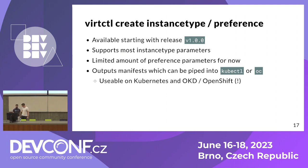As Felix said, we were working on adding virtctl create instance-type and preference commands. These commands help you to create the manifests — they will generate them for you. For virtctl create instance-type, we have support for most of the parameters that you can specify manually in the manifest YAML. For the preference command, we don't cover all options yet, but this command should serve more like a starting point so you avoid writing the whole YAML manifest from scratch. Basically you generate the YAML, save it to a file, and then modify it based on your needs. The outputs of these commands can be saved to file or piped into kubectl or the OC client to create objects in your Kubernetes or OpenShift cluster directly.